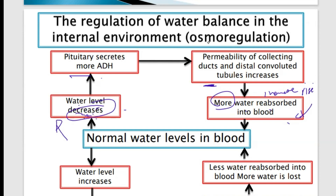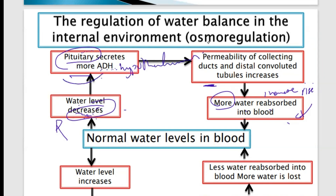Some students have confusion here. Which gland produces ADH? The gland is the hypothalamus. Why are we talking about the pituitary gland here? The hormone ADH — anti-diuretic hormone, make sure you know how to write it — is produced by the hypothalamus but is stored in the pituitary gland. So when you use hypothalamus here, make sure you know how to link it.